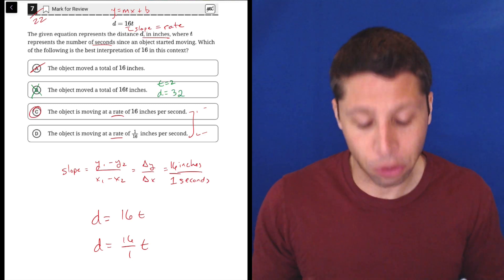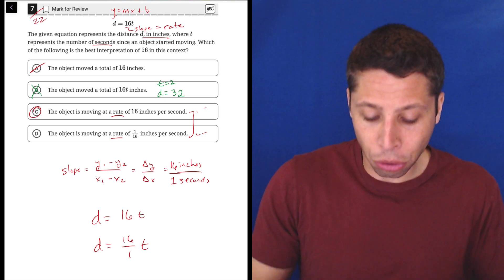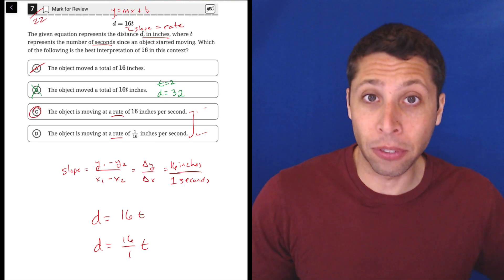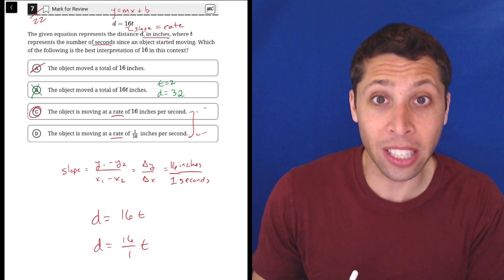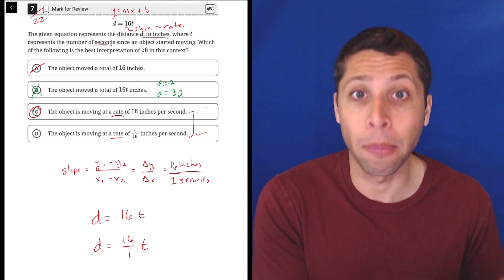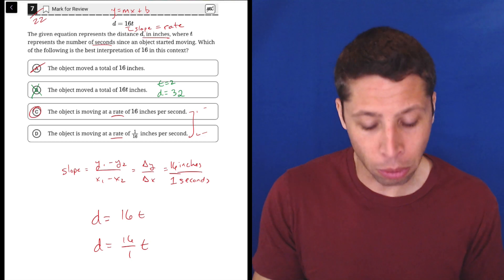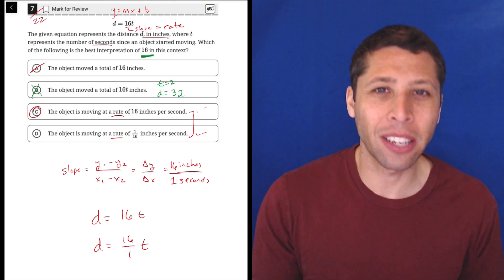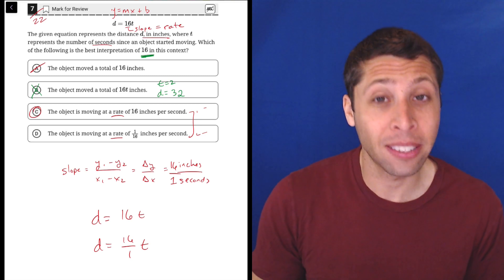So in a way, choice B is correct. It is true that no matter what value we plug in for T, the total distance will be 16 times that number, times the value of T that we make up. So B is kind of true, but it's not what they're asking. They're not asking for the value of 16T, they're not asking for what D represents, they're just asking plain old what is that 16.